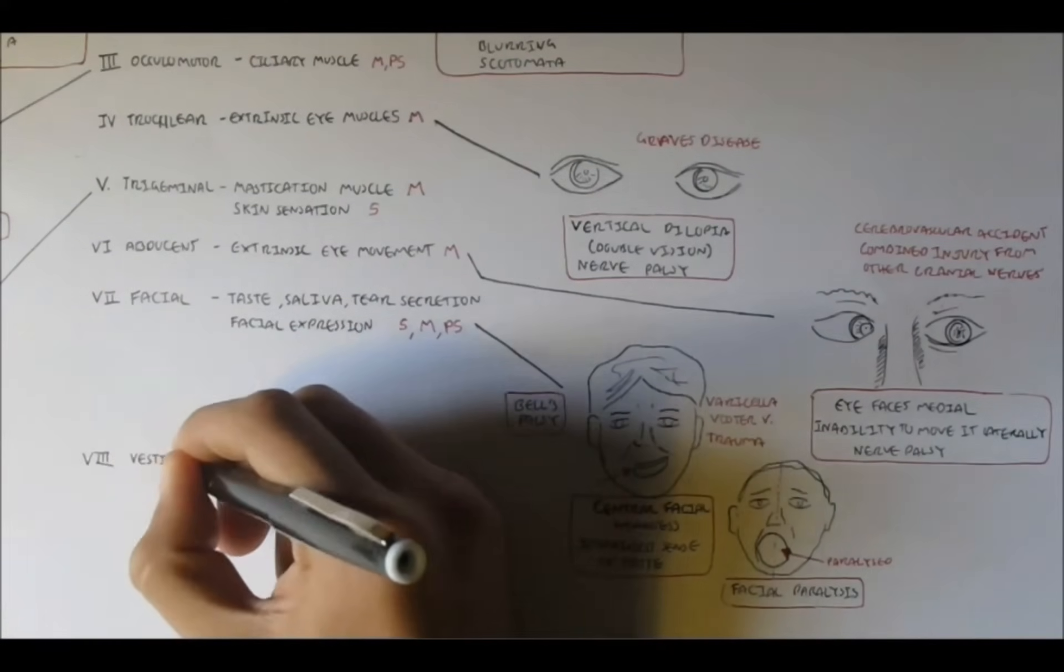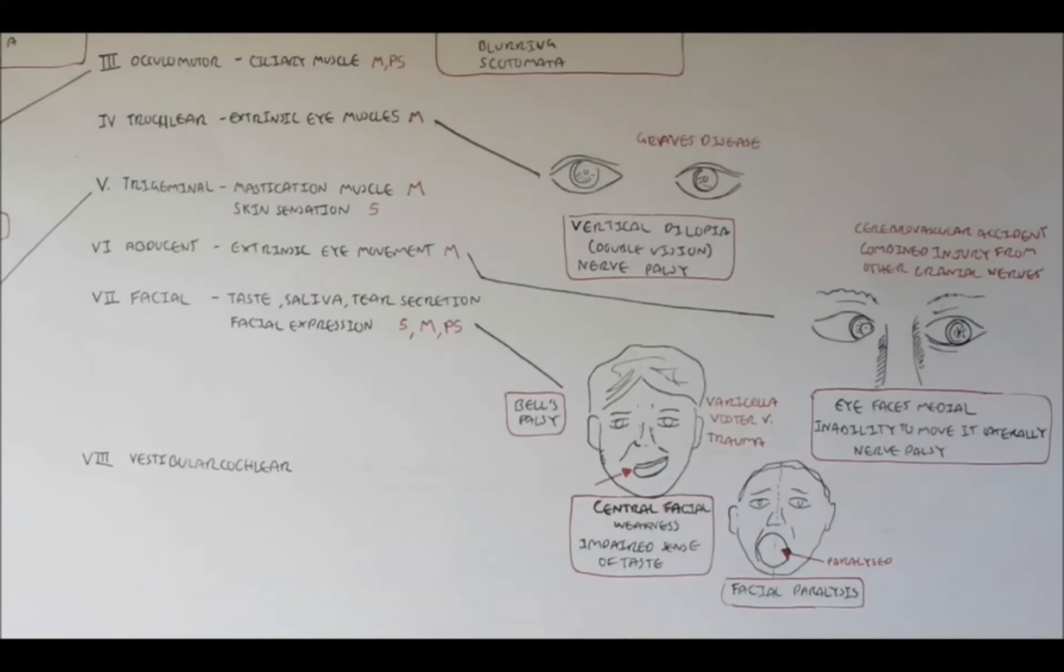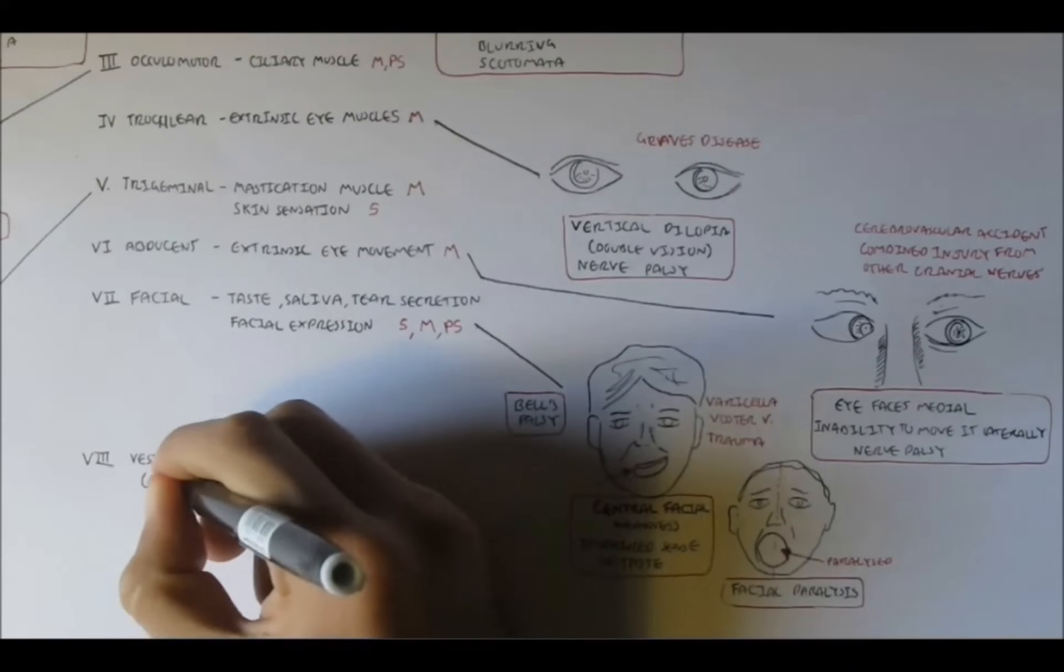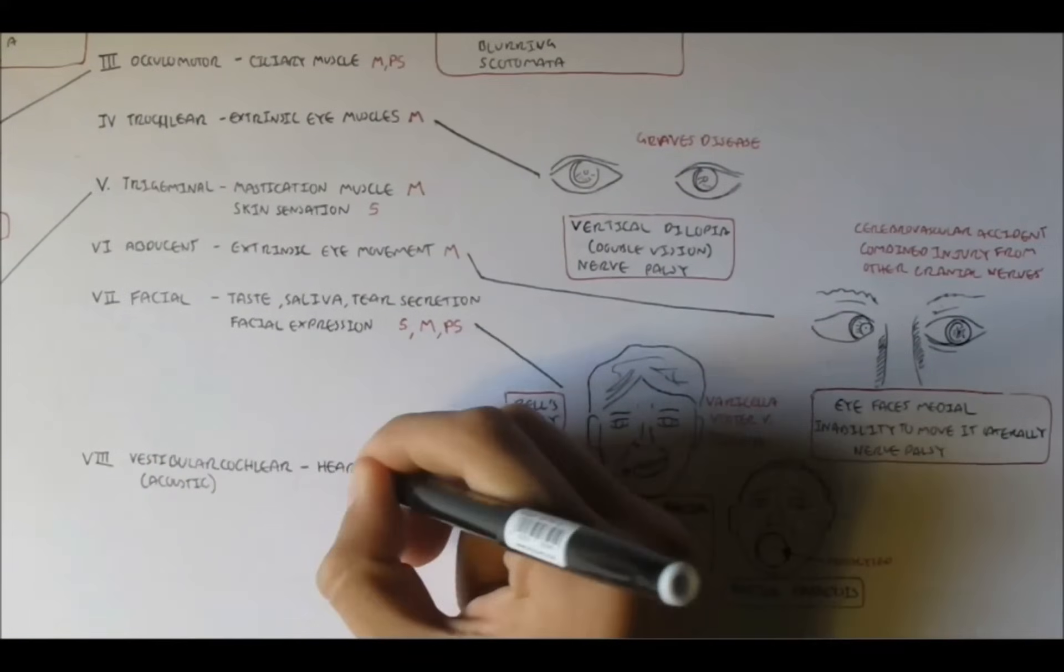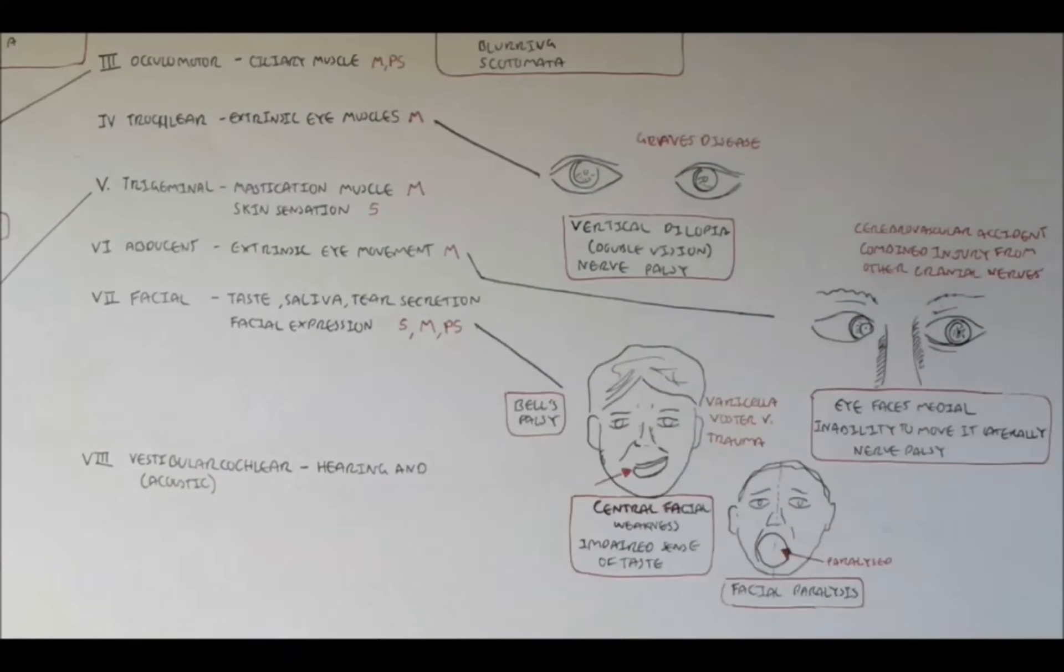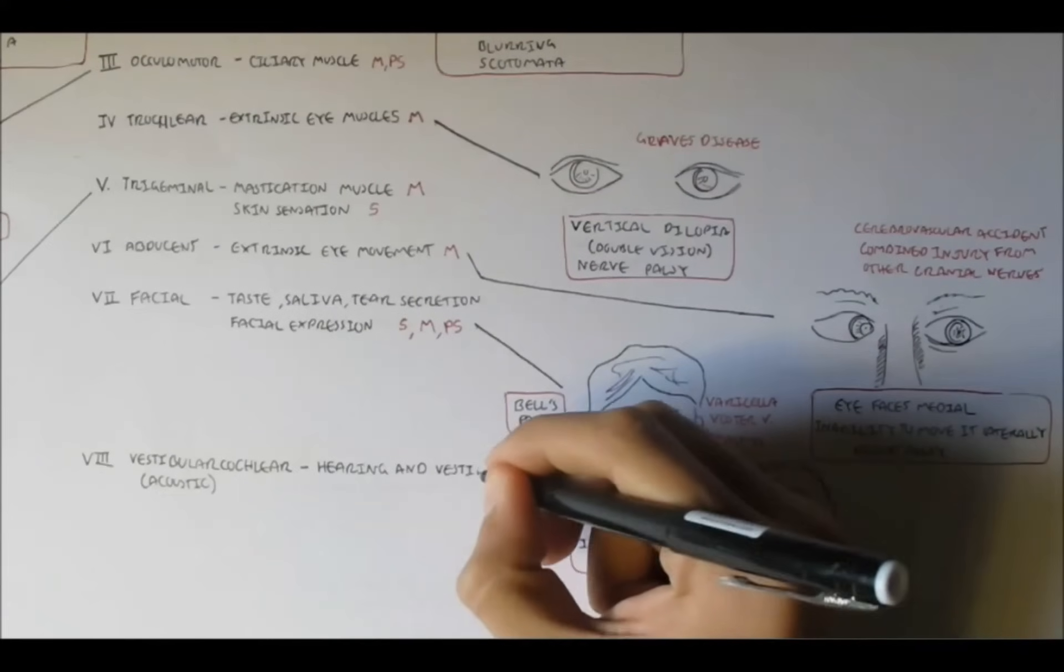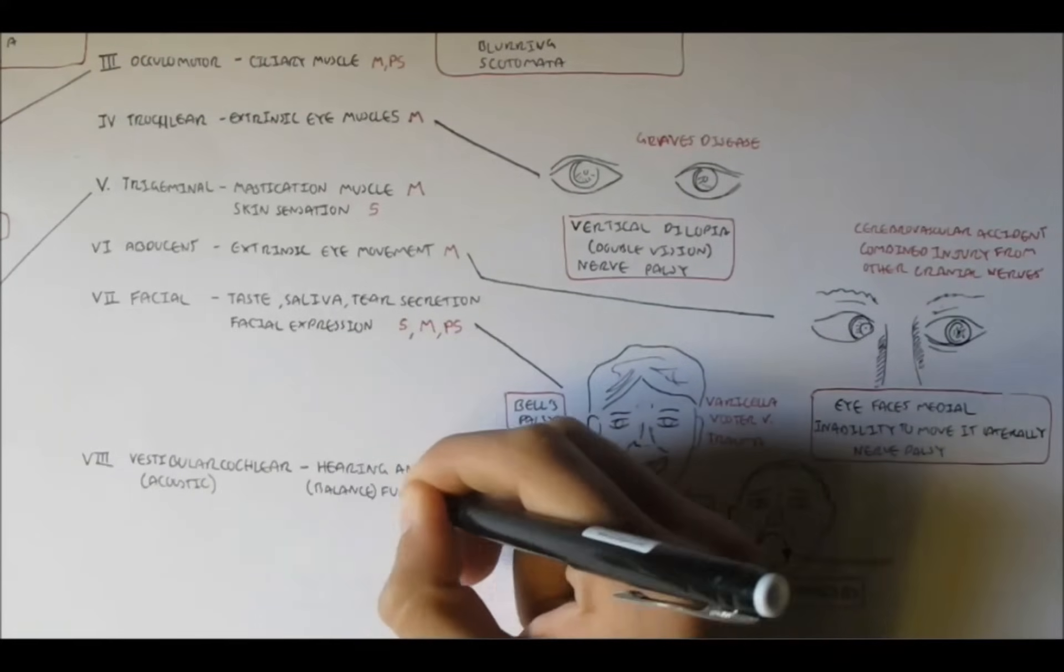Our next nerve is nerve 8, which is the vestibulocochlear nerve, also known as the acoustic nerve. It's important in hearing and vestibular function, so balancing, in the ear, and also the body. So it's a sensory and also a motor nerve.